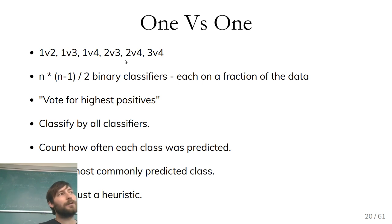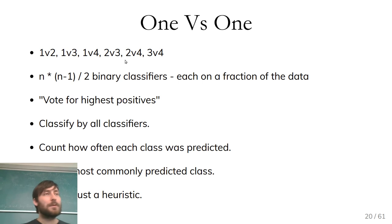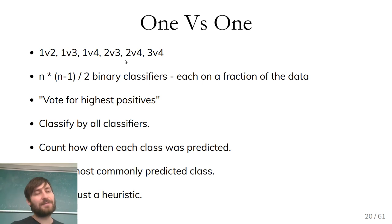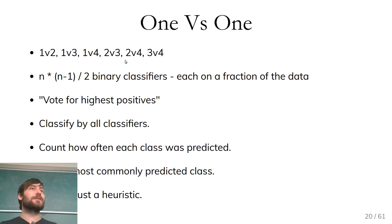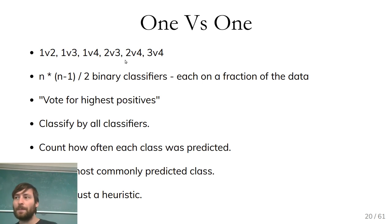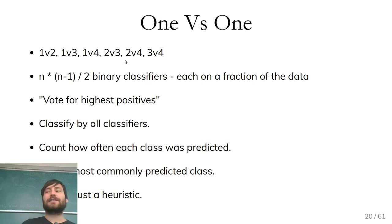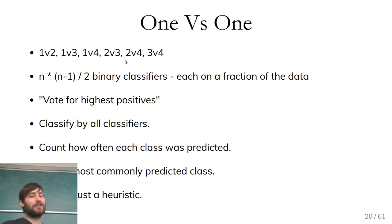One versus one: we build a binary classifier for each pair of classes. With four classes, we build classifiers: one vs two, one vs three, one vs four, two vs three, two vs four, and three vs four. That's N times N minus one divided by two binary classifiers. If the number of classes is more than three, we have more classifiers, but each is only trained on a subset of the data. In the classifier one versus two, only data in classes one and two is used. To make a prediction, we apply all classifiers and each one gets a vote. We count how often each class was predicted and return the most commonly predicted class.